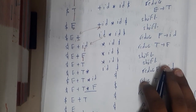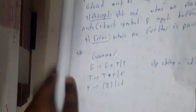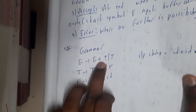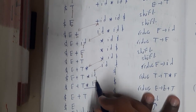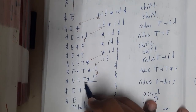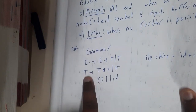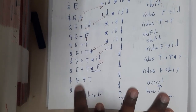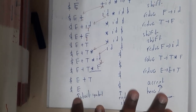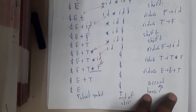F is then converted to T using T → F. Now the stack has dollar-E-plus-T. We also push the star and the next id, which is again converted to F, then T using T → T*F. Now the stack has dollar-E-plus-T again. E+T matches E → E+T, so we reduce to E. We've reached dollar, so the string is accepted.